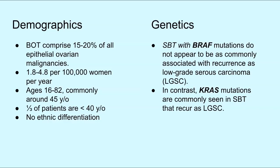Borderline ovarian tumors comprise about 15 to 20% of all epithelial ovarian malignancies, with an incidence of 1.8 to 4.8 per 100,000 women per year. Patients with borderline ovarian tumors are typically between the ages of 16 and 82. There is no agreement on any significant differences in ethnic groups.